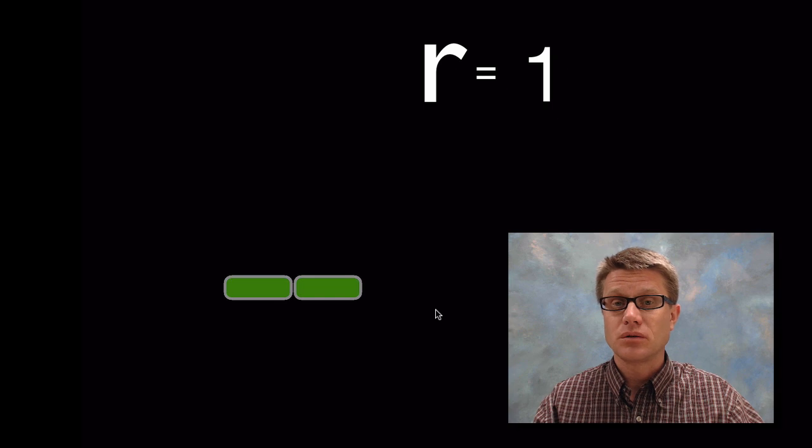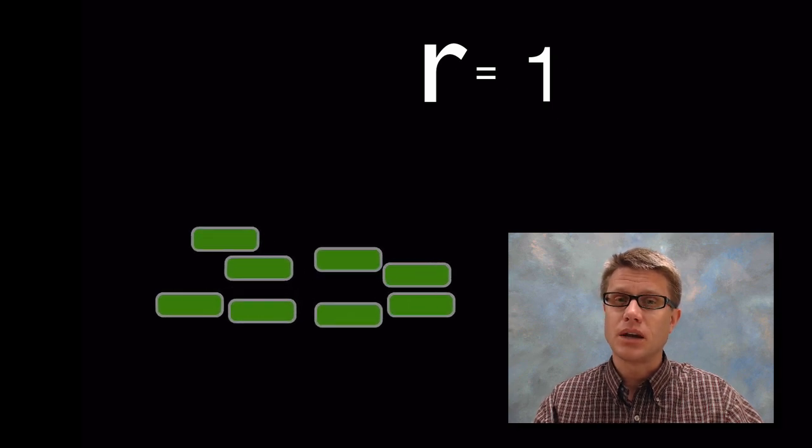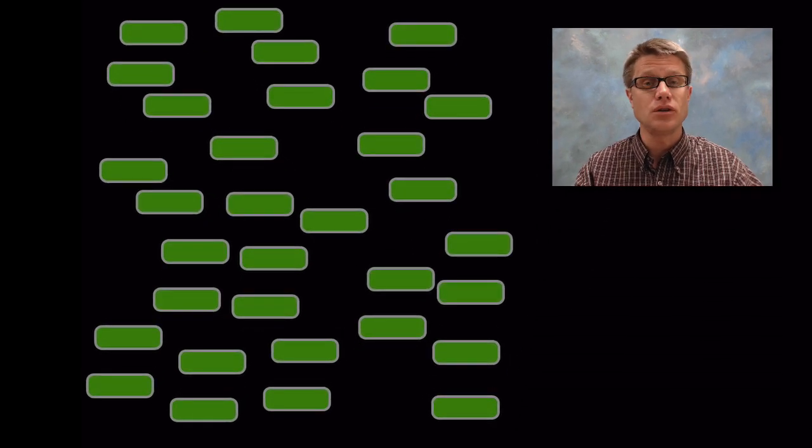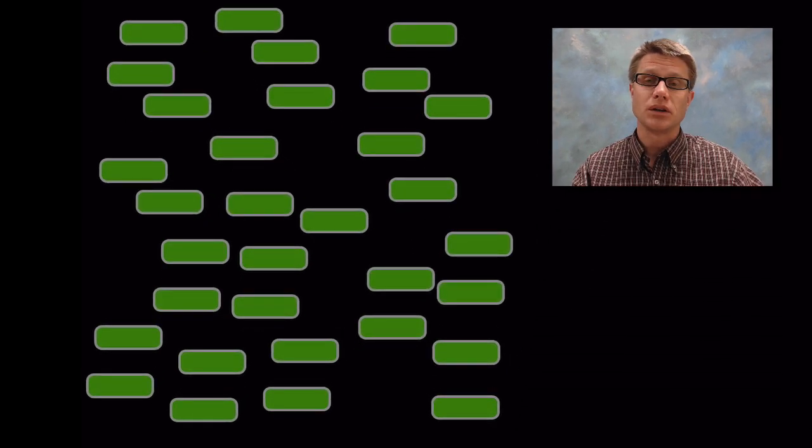And so what are we going to have on the next round? We're going to have 4 and 8 and 16 and then 32. And you can see how exponential growth gives us a huge amount of bacteria really, really quickly.